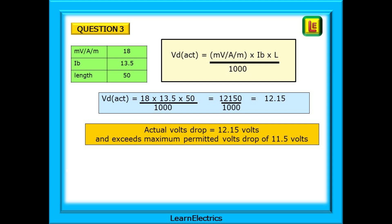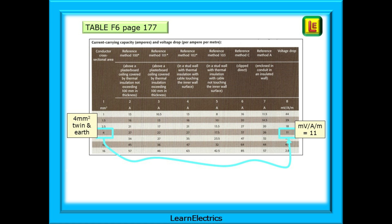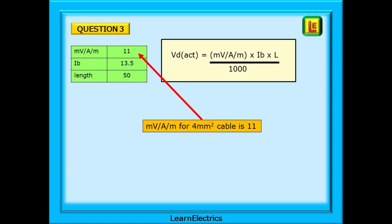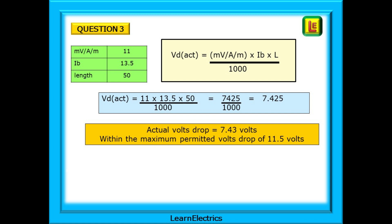What can we do? That was 2.5mm cable. Let's try again with 4mm cable. Just follow the same process. Start by finding the number for 4mm cable on page 177. The MVAM for 4mm cable is 11 and we already have the other two variables. Back to the calculator and this time our answer comes out at 7.43 volts actual voltage drop. So we should use 4mm cable as this gives an acceptable voltage drop.